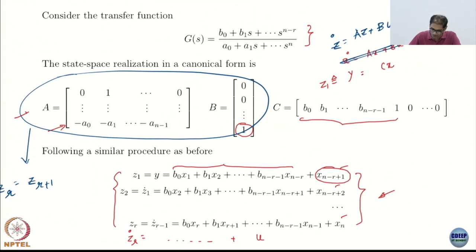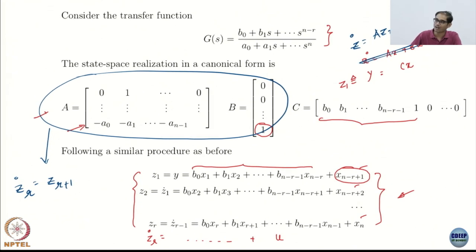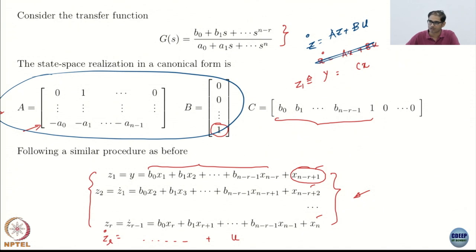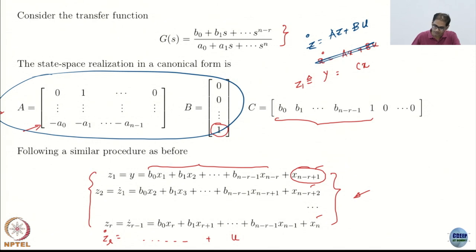It is just how the transfer function is — it is very deliberately done. We do not define Z_{r plus 1} as Zr dot. We define new coordinates, the phi coordinates. These are only the linear coordinates. How we get the dynamics of the linear coordinates is simply by taking consecutive derivatives of y, just like we have been doing.